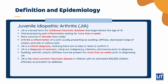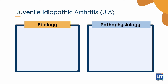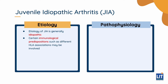JIA is the most common rheumatic disease in children and is as prevalent as diabetes, with an estimated 300,000 children affected. The etiology of JIA is generally idiopathic. However, there may be certain immunological predispositions such as different HLA associations. It may also be triggered by a viral or bacterial infection.